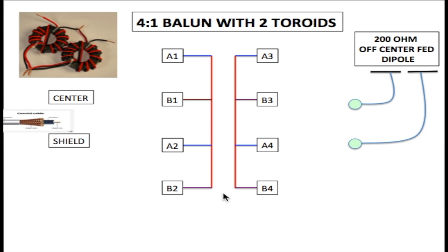It goes through a transformer function here which is the actual toroid. This is where you actually wrap your wires around, and the output from A1 is A3, B1 is B3, A2 is A4, and B2 is B4.